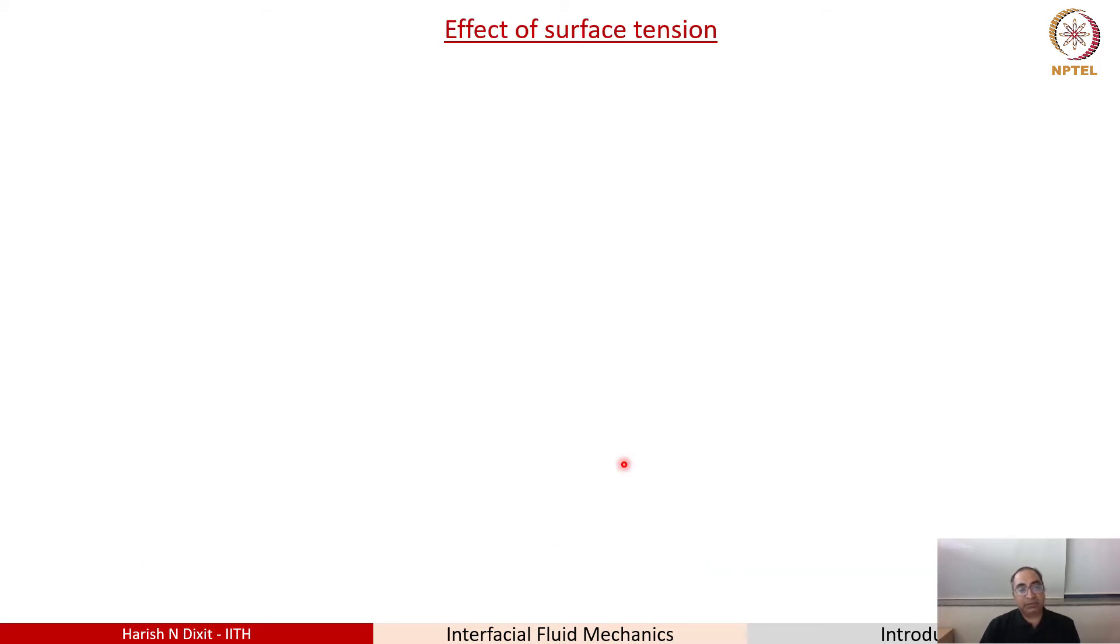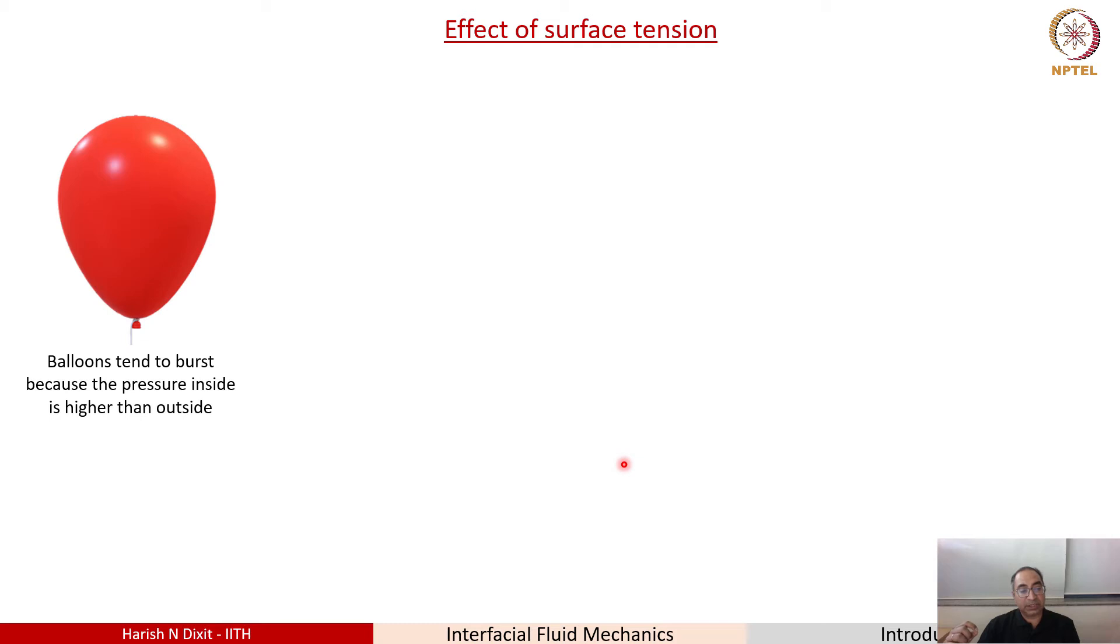Now in this particular slide, I'm trying to show you what are the common differences because of one new additional force that will be considering throughout this course, which is the effect of surface tension. Now let's look at the effect of surface tension in the context of—first let me first explain the case of a balloon. Now if you see a balloon, we know that the pressure inside is higher than the pressure outside and one of the reasons, this is one of the main reasons why balloons tend to burst. If the pressure inside exceeds a critical value, they tend to burst because the pressure inside is higher than outside.